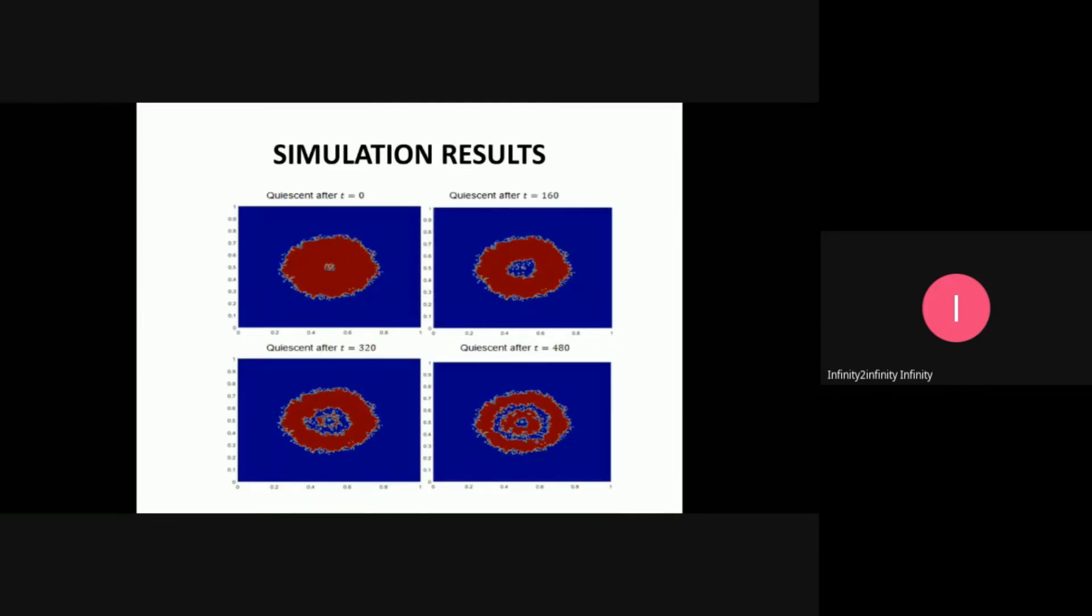After running 35,000 steps, the simulation results show proliferating cells, quiescent cells, and all cell movements. At time t equals zero, the center of the tumor is very small. With increasing nutrient decay rate, which is absorbed by the cells, the center grows. Proliferating cells turn into quiescent cells, and quiescent cells turn into necrotic or dead cells. The center is moving like this.